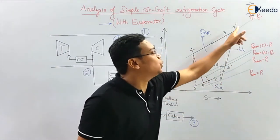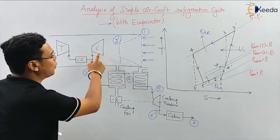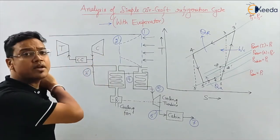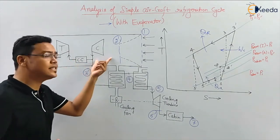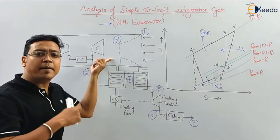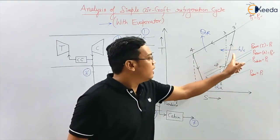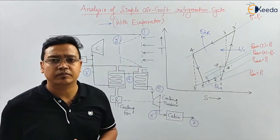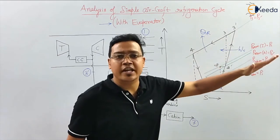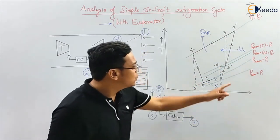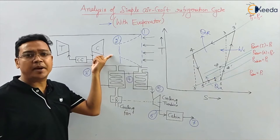Now, two dash to three dash — after the air comes from the diffuser, it will go to the compressor. In the compressor, adiabatic compression will take place. Due to irreversibility, the process will shift and entropy will increase. So two dash to three dash is the actual compression process, which is an adiabatic compression process.